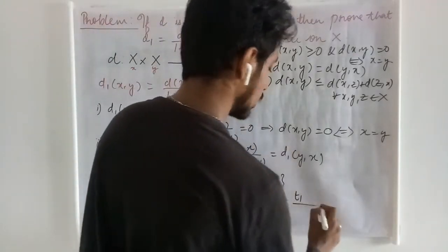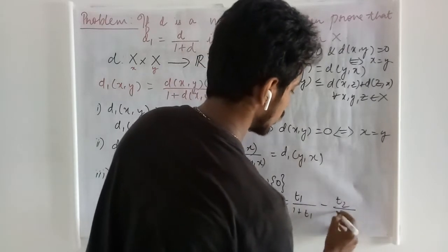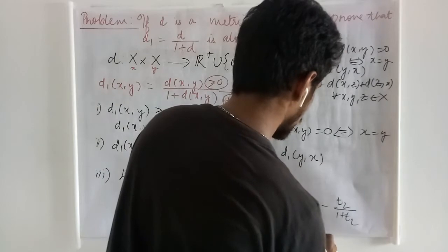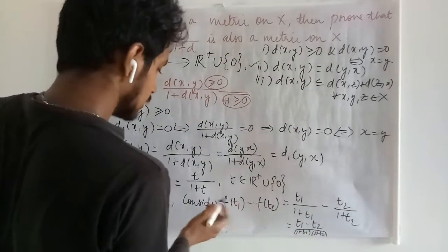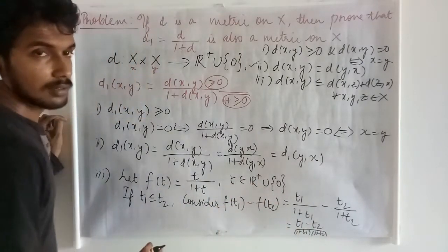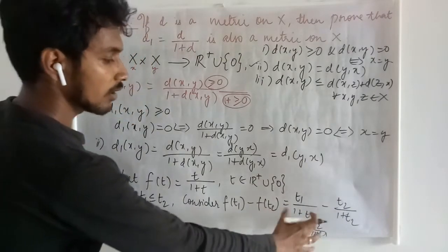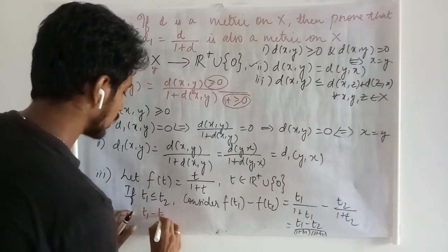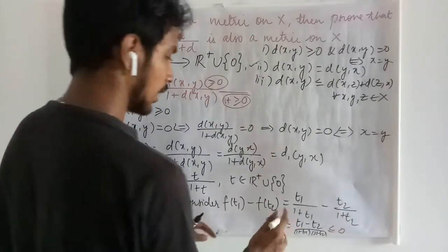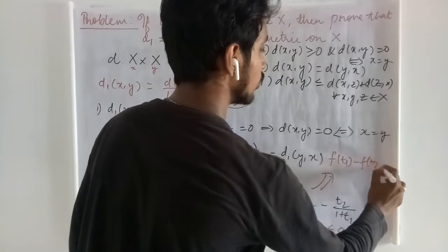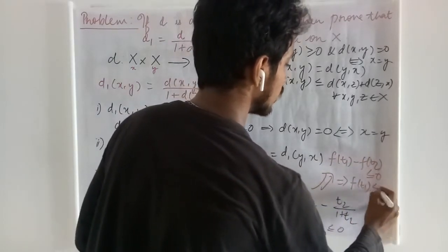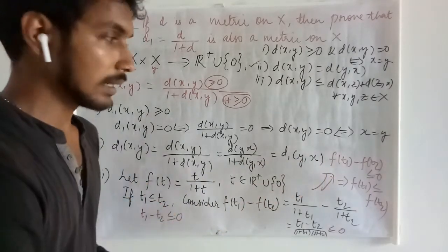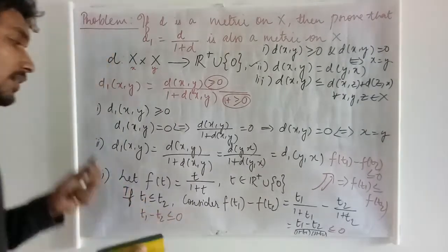F(T1) minus F(T2) equals T1 upon 1 plus T1 minus T2 upon 1 plus T2, and simple calculation gives T1 minus T2 upon (1 plus T1)(1 plus T2). Since T1 and T2 are non-negative, the denominator is positive. Since we took T1 ≤ T2, T1 minus T2 ≤ 0, hence F(T1) minus F(T2) ≤ 0, that is, F(T1) ≤ F(T2). We started with T1 ≤ T2 and proved F(T1) ≤ F(T2), so F is an increasing function.